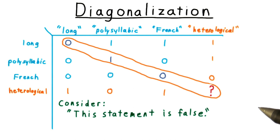At this point, you've probably guessed where this is going for this course. We're going to apply the diagonalization trick to Turing machines.